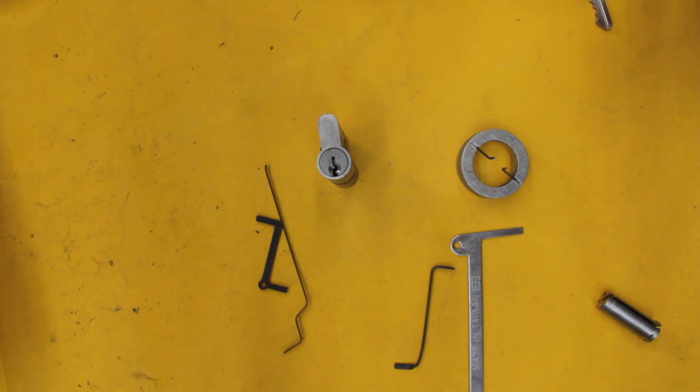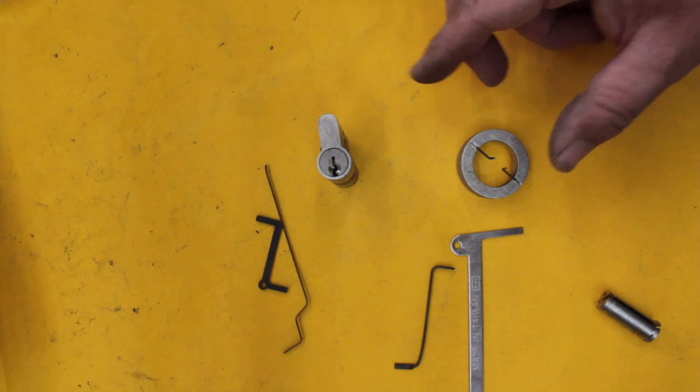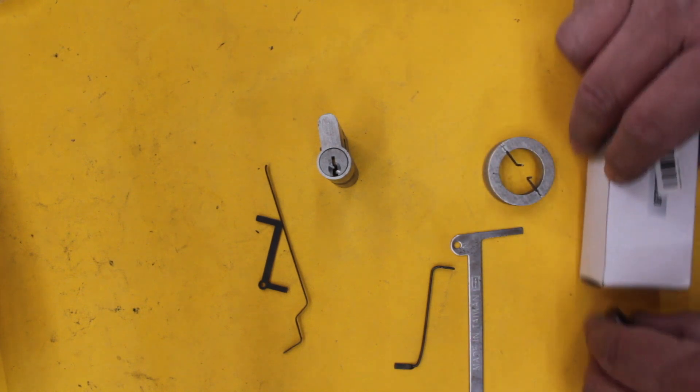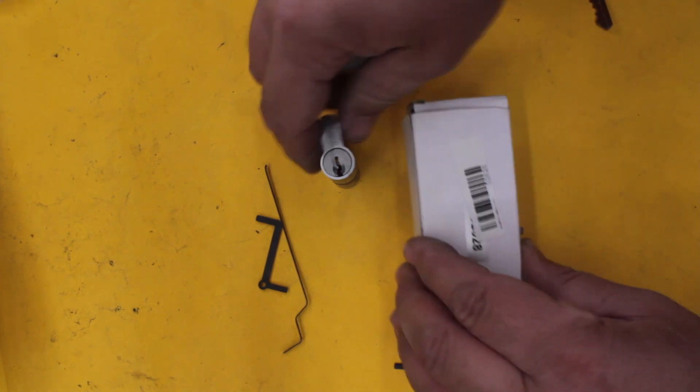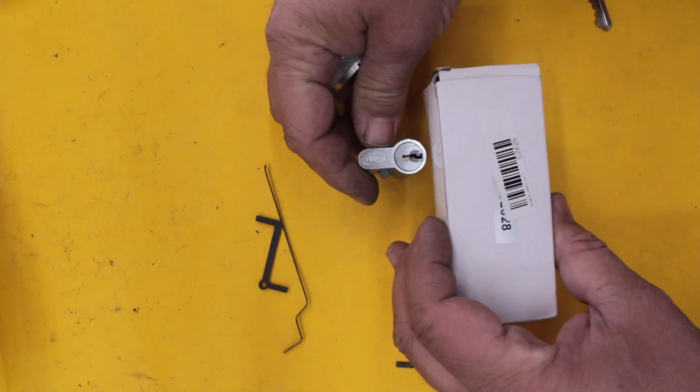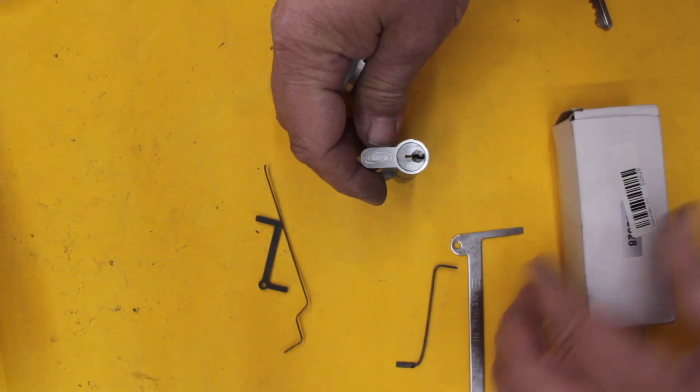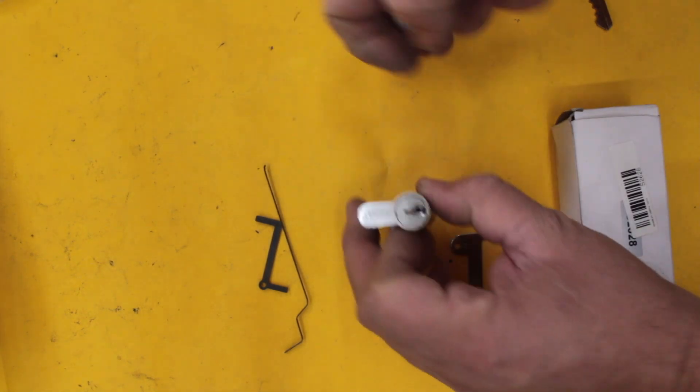I don't use it a lot. The times that I use it mainly is when my lock is in a hard-to-get-to spot. For example, if I was picking this direction and my door frame was up here and I couldn't get in a tension tool like this, I would use this one here.